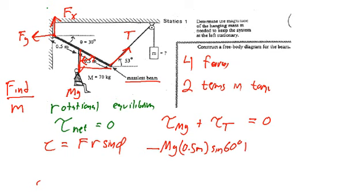Then the torque due to the tension will be equal to the value of the tension times the length of the rod, which is 1.0 meters, times the sine. This time we'll want this angle between the rod and the tension and so that's going to be the 53 plus 30, which is 83 degrees. And those two terms will add together to give us zero.